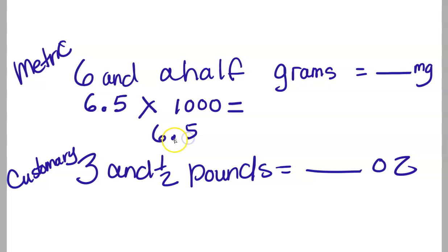And I know that 6.5 times 1,000 means I'm going to have to make 6.5 a thousand times bigger. So I'm going to do that by moving my decimal place to the right, 3 place value places: 1, 2, 3. Annex my 0 so I can see it's going to be 6,500.